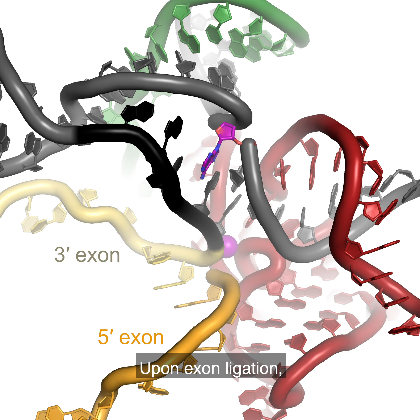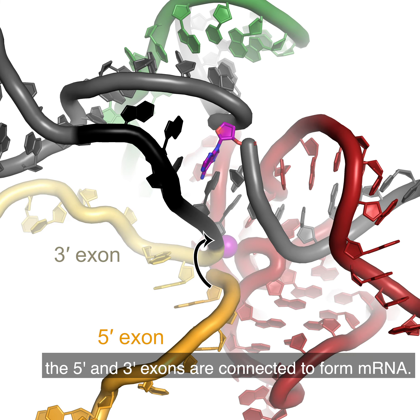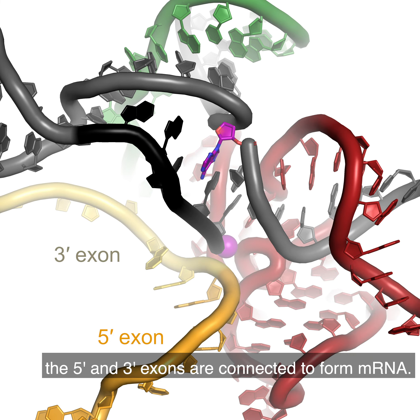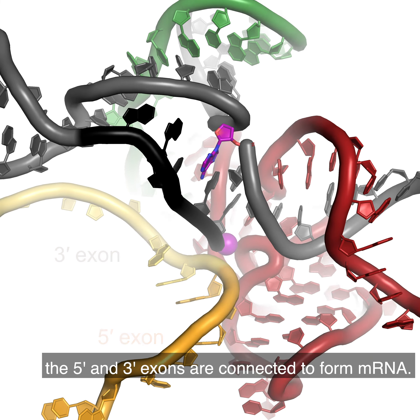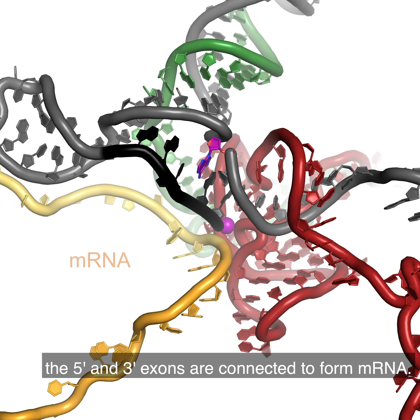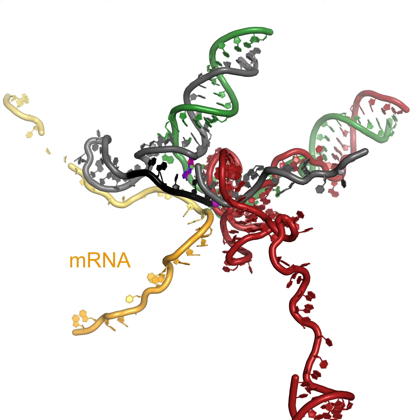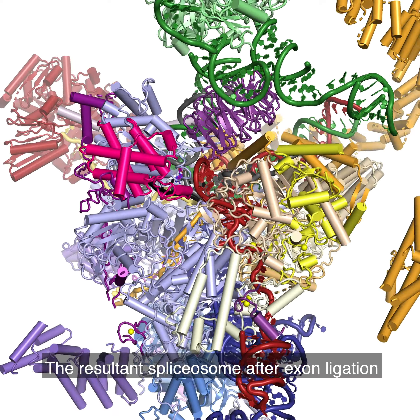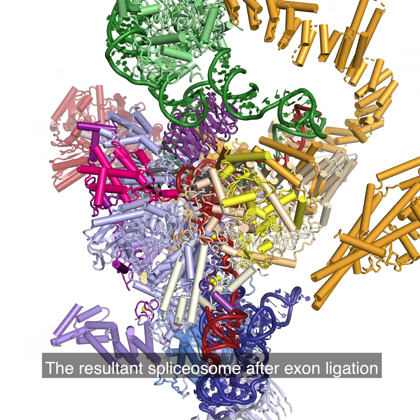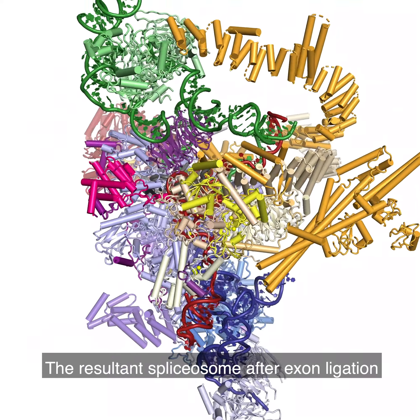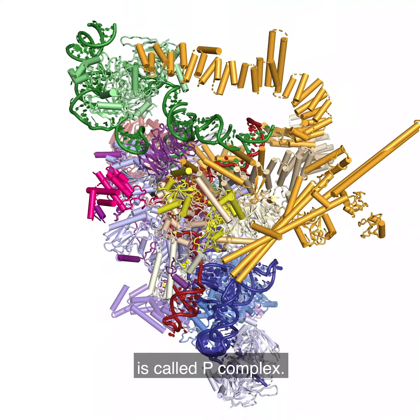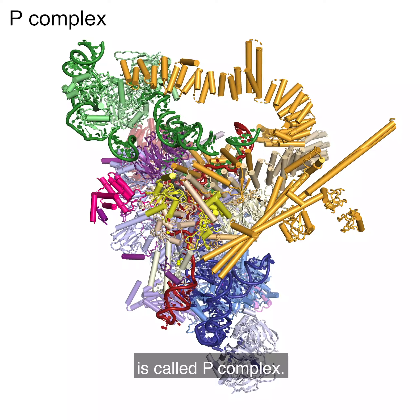Upon exon ligation, the 5' and 3' exons are connected to form mRNA. The resultant spliceosome after exon ligation is called P-complex.